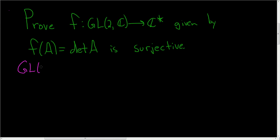This is called the general linear group of order 2. This is basically all 2×2 matrices with complex entries and determinant non-zero. So it's all of the invertible 2×2 matrices with complex entries.